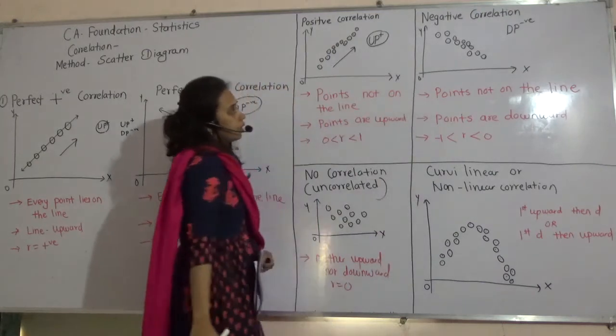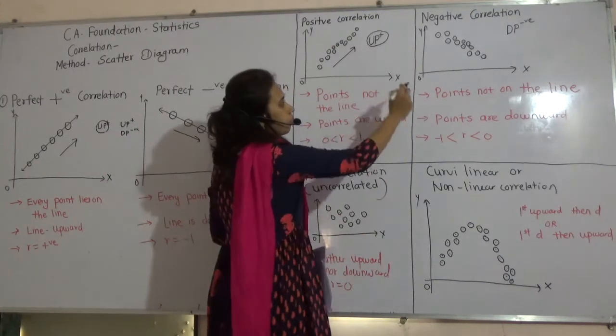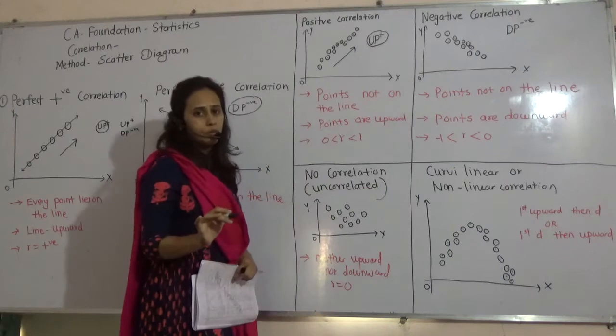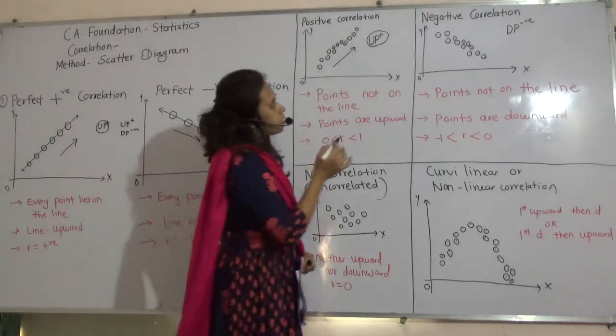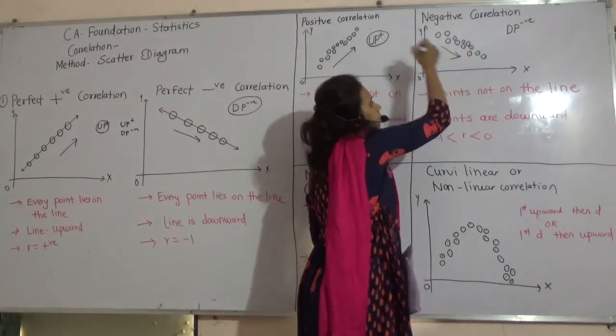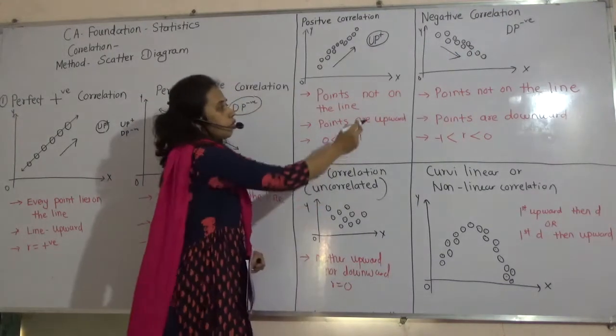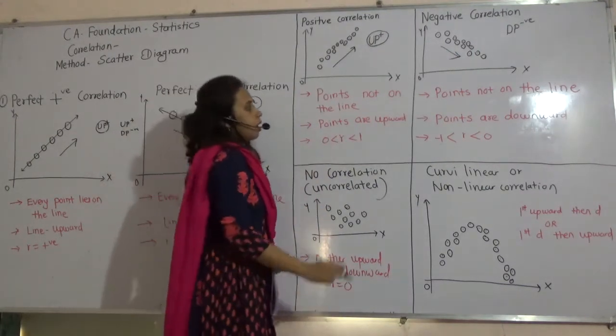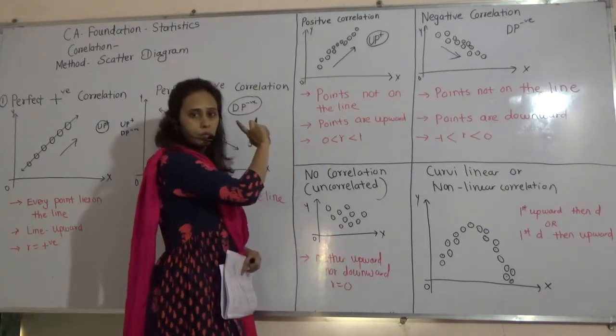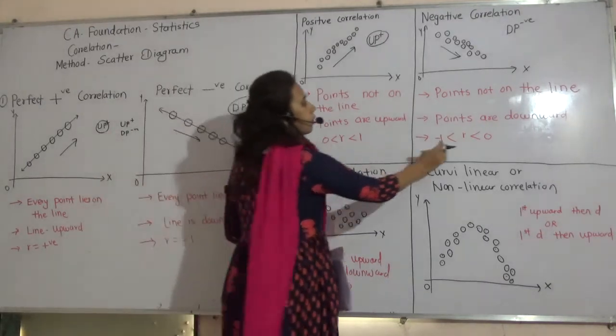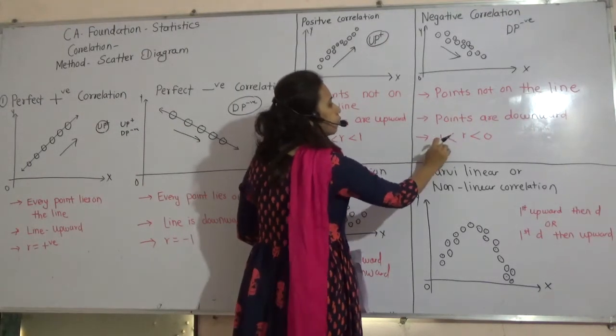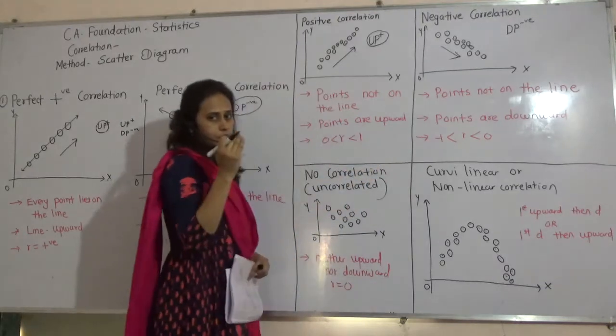Next, negative correlation. Same. Points not on the same line. But, from there, you can see that the movement is downward sloping. So, points are downward. Earlier, R is equal to minus 1. But, now, we will say that it is more than minus 1 but less than 0.